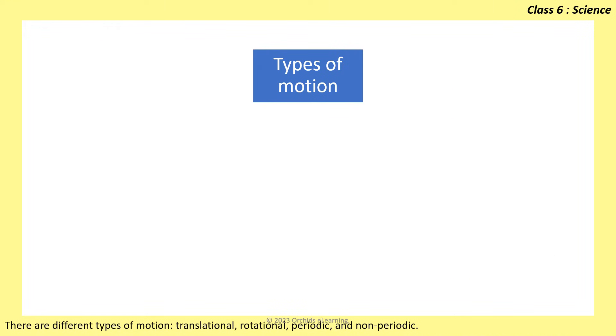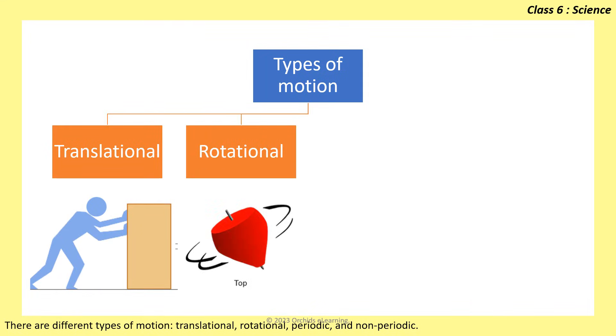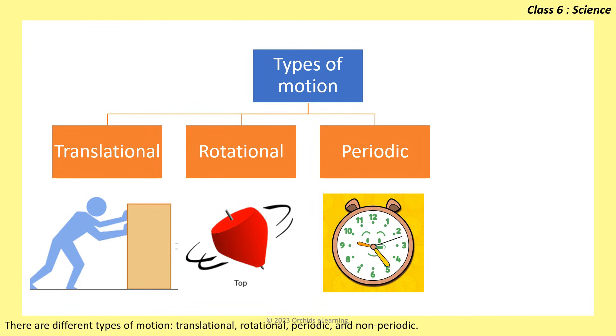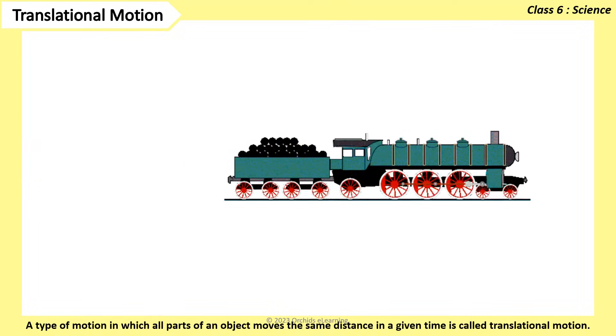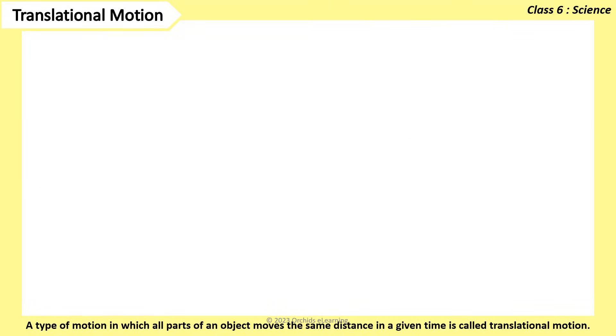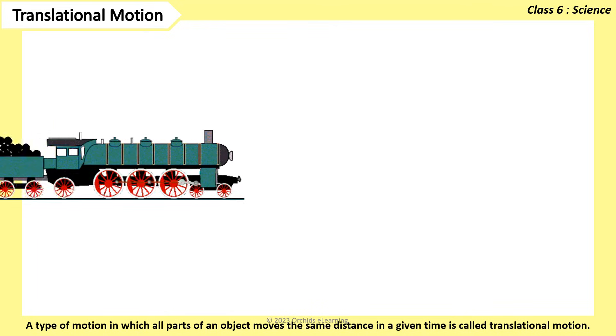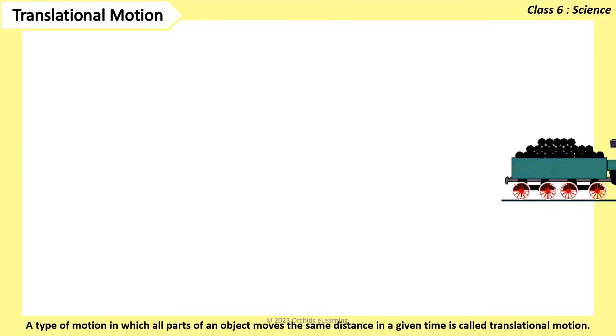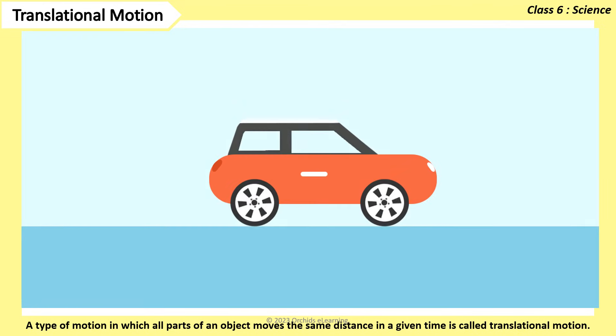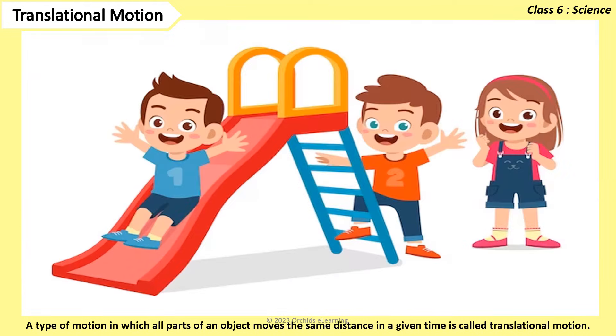There are different types of motion: translational, rotational, periodic, and non-periodic. A type of motion in which all parts of an object moves the same distance in a given time is called translational motion. Examples are vehicle moving on road, a child going down a slide, etc.